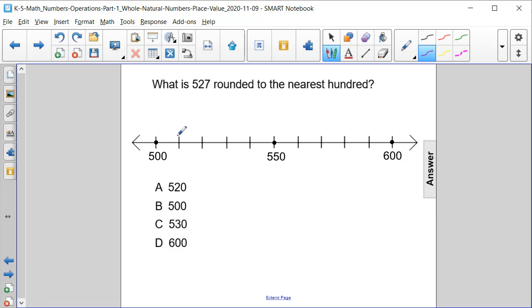Each tick mark represents 10 units. So we have 500, then the next tick mark would be 510, then 520, and then 530. Therefore, the number 527 is located right about here.